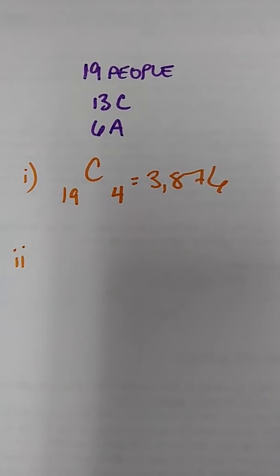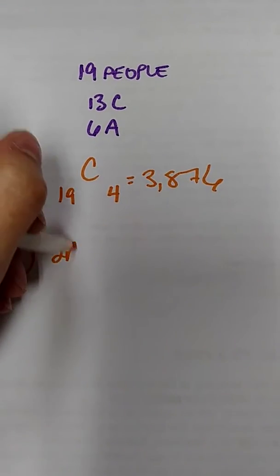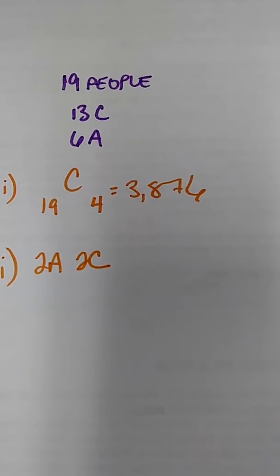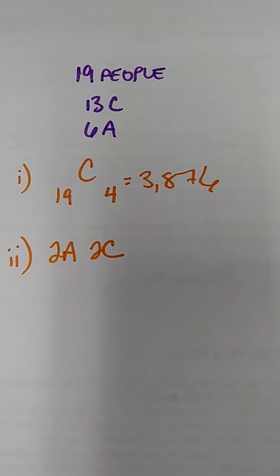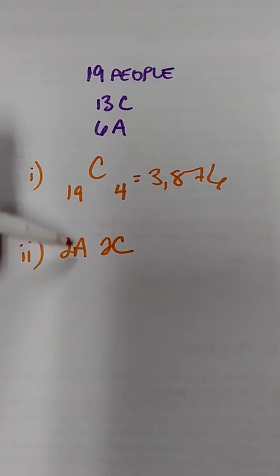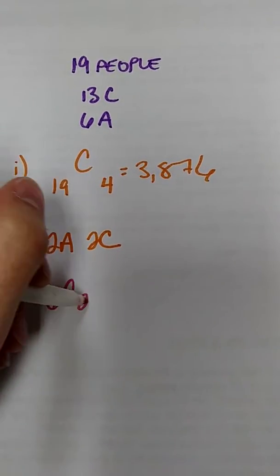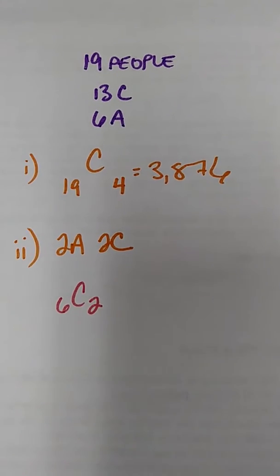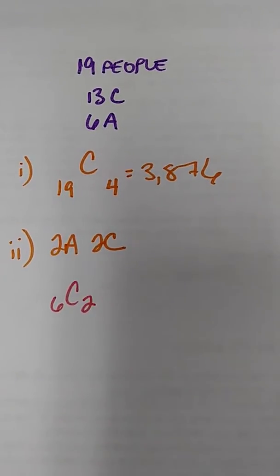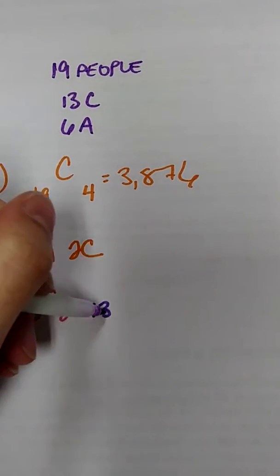For the second portion, it's asking something a little bit more specific. It says, how many ways are there if there must be two adults and two children working together? So we have to pick two adults and two children. So we're going to have to make a decision about adults. We have six to choose from, and we only need two. So we'll do 6C2 for that portion. And then we have to decide on the children. We have 13 to choose from, and we only need two of them. So we'll have to do 13C2.